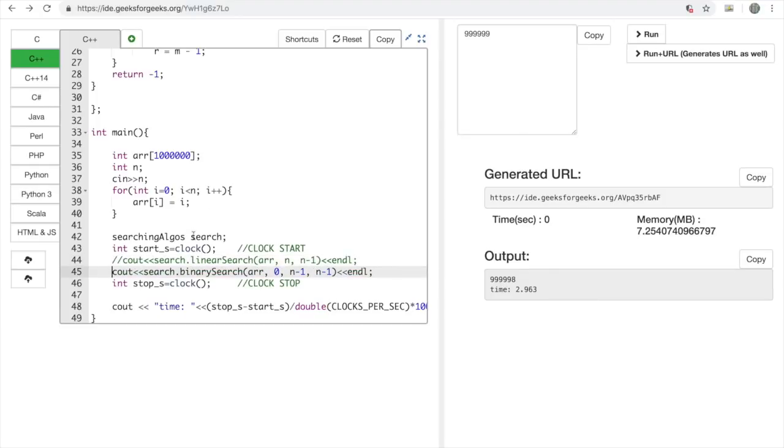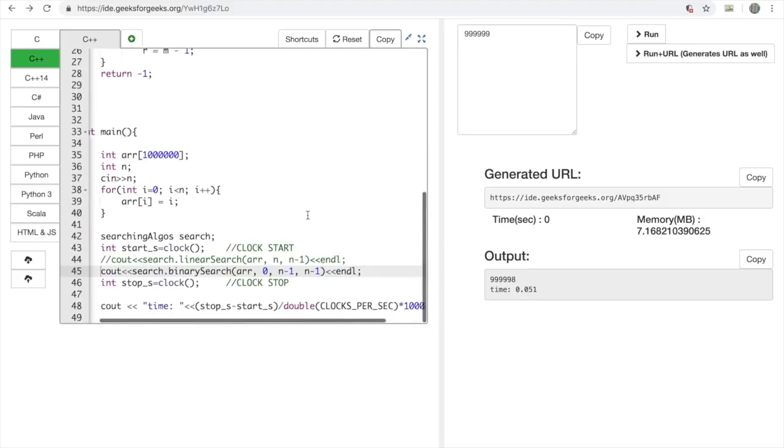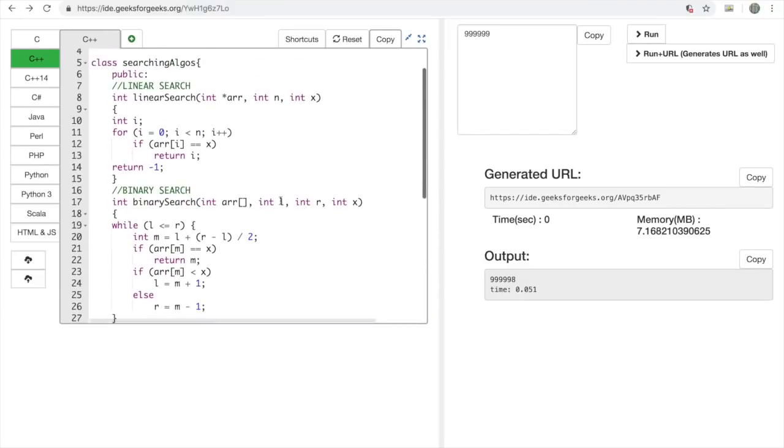Now let's execute the code for binary search. Binary search takes 0.051 seconds, which is much less time than linear search. So binary search is faster than linear search.